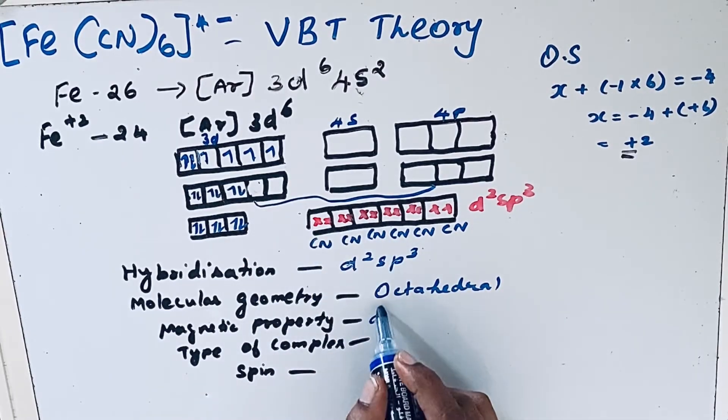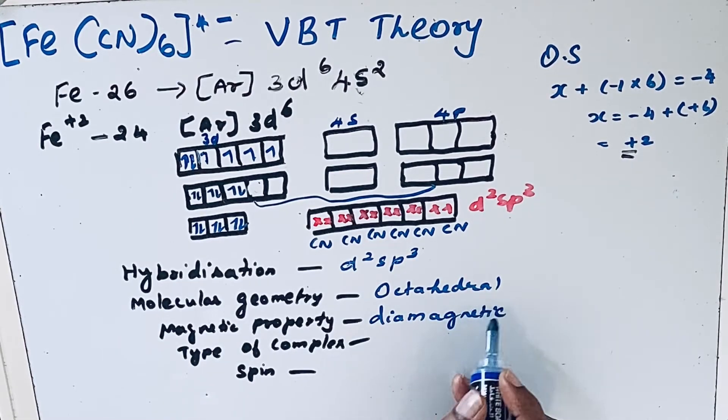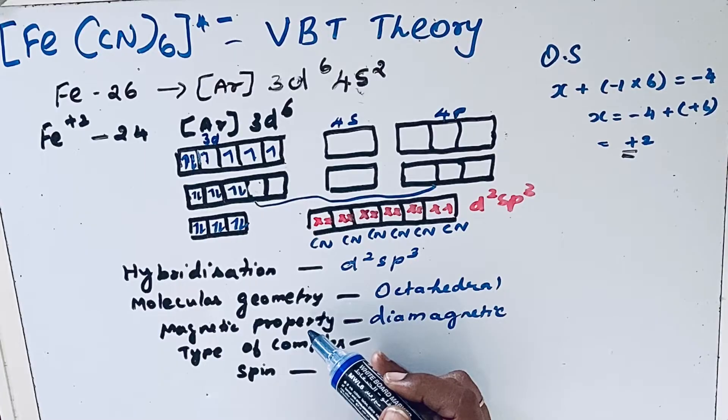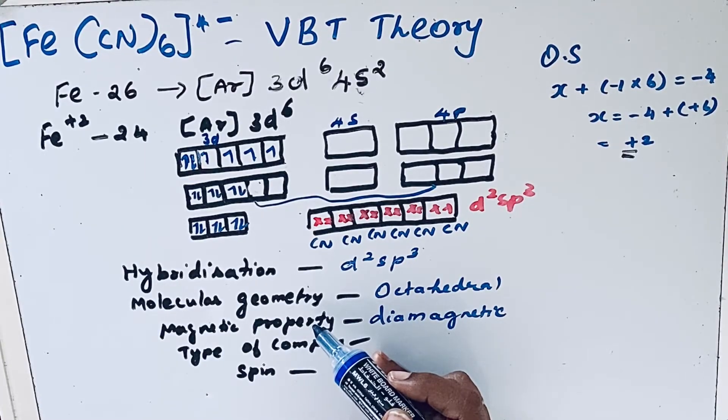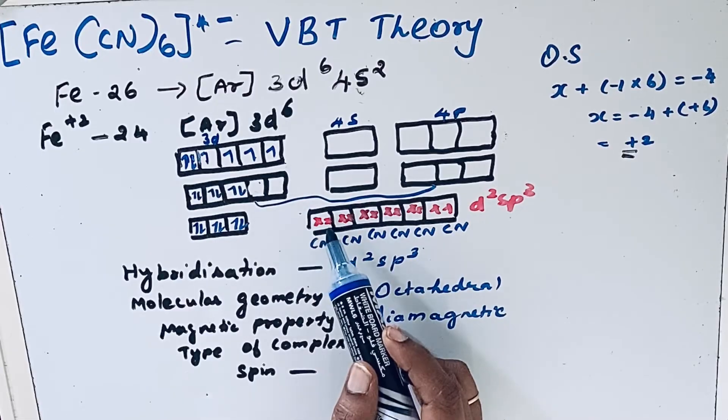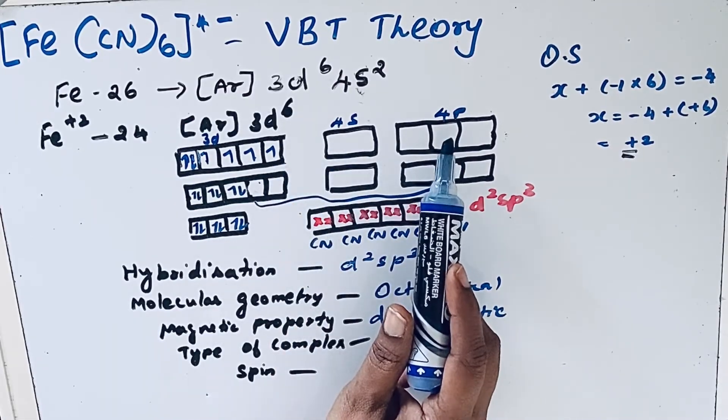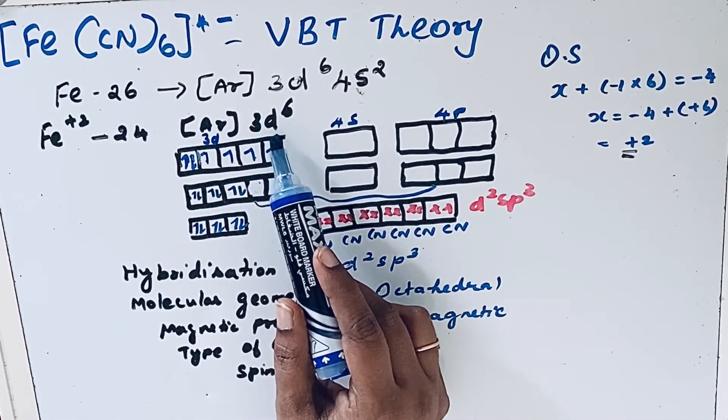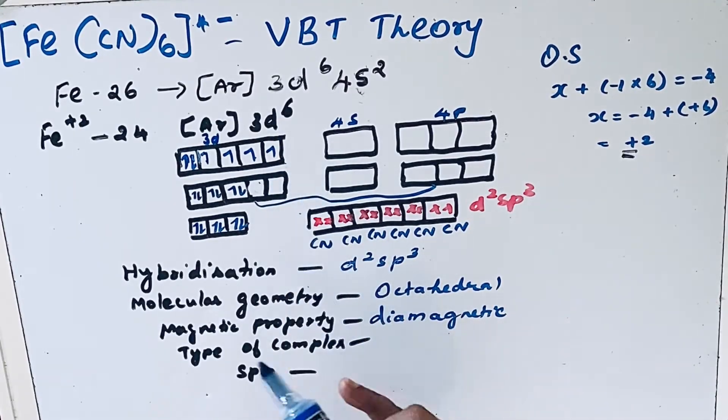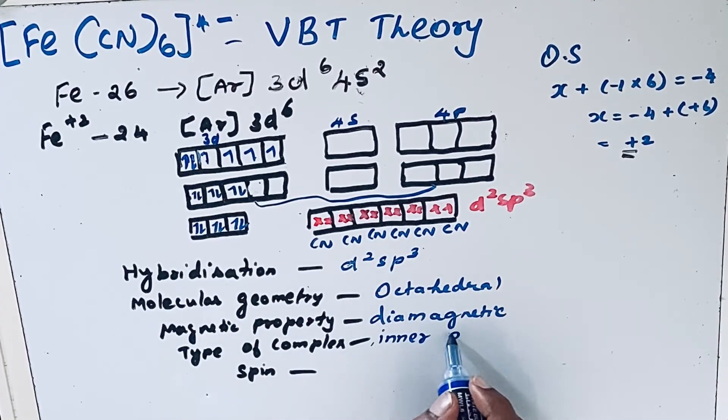diamagnetic. Regarding the type of complex, since 3d orbitals are involved in bond formation along with 4s and 4p orbitals, and these 3d orbitals are inner orbitals, this is called an inner orbital complex.